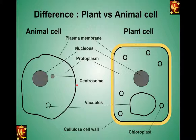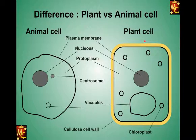So plant cells have several extra structures compared to animal cells: chloroplasts, cell wall, and vacuoles. Animal cells, on the other hand, have the centrosome as their distinguishing structure. The remaining features are quite similar between the two. These are the main differences between plant and animal cells.